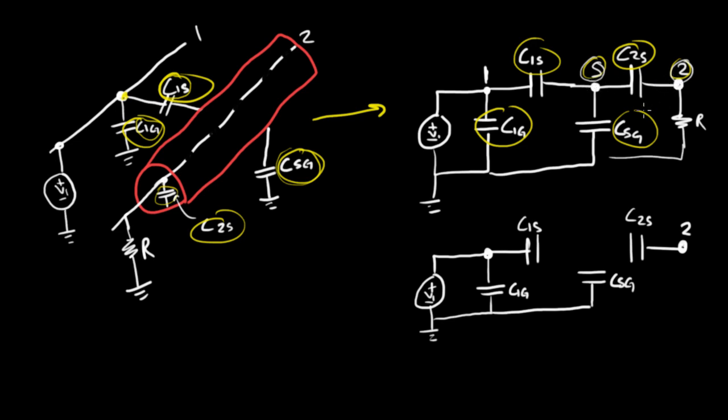And this is very bad because whatever noise voltage that the shield picks up can be capacitively coupled to wire two, which eliminates the reason for having a shield in the first place as far as capacitive coupling is concerned.